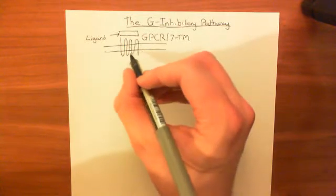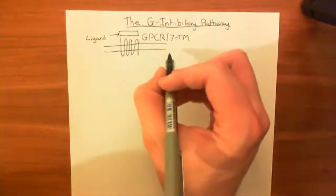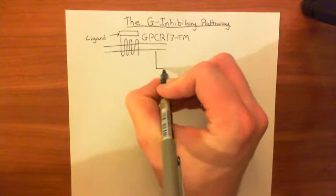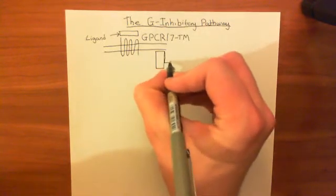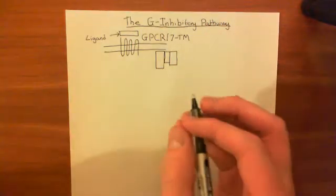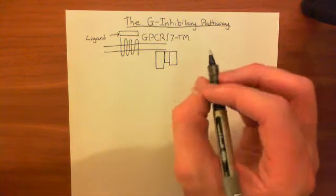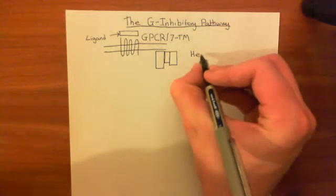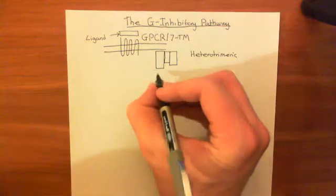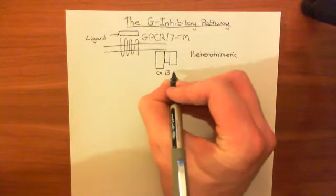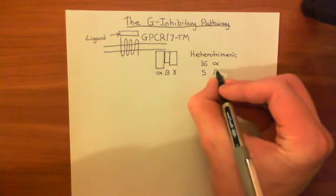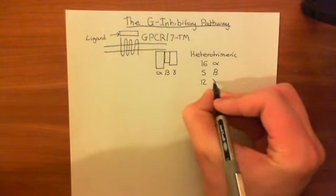Before we can see what the GPCR is actually going to do, we need to introduce another player — the G-inhibitory heterotrimeric G-protein. G-proteins consist of three subunits. 'Hetero' means different, 'trimeric' means made up of three subunits — three different subunits: alpha, beta, and gamma. There are 16 choices for the alpha subunit, five choices for the beta subunit, and 12 choices for the gamma subunit.